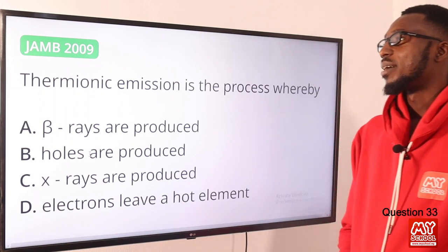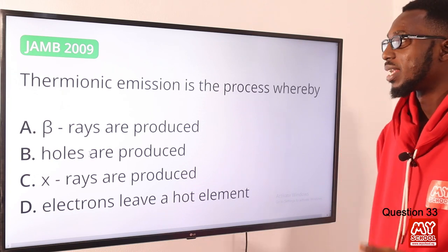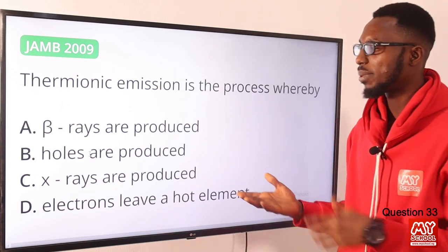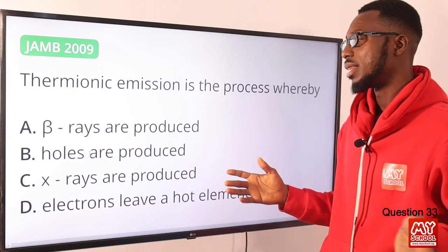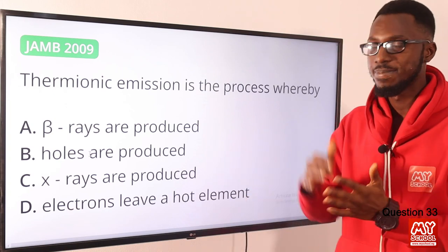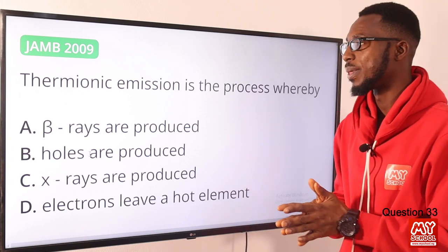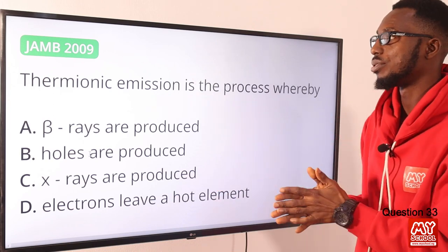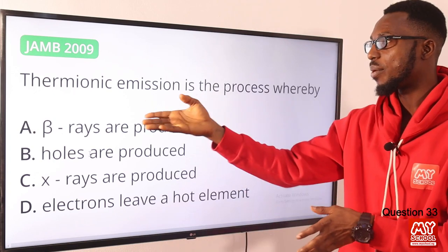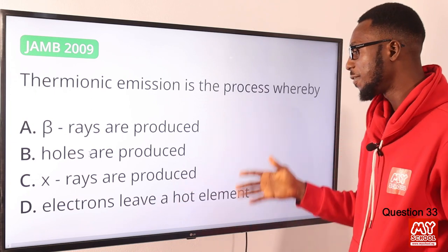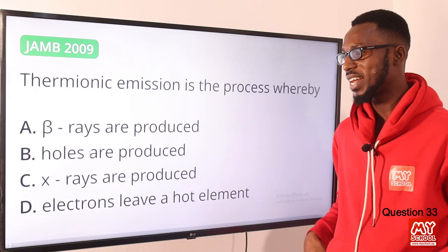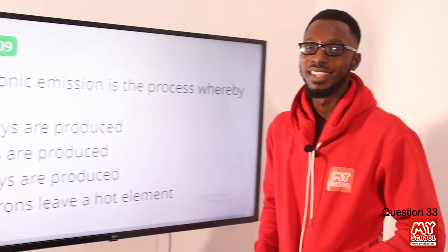Question 33: Thermionic emission is the process whereby electrons are emitted from an electrode or metal due to heat — by virtue of temperature. This differs from photoelectric emission, which is caused by light falling on the surface. Thermionic emission is the process whereby electrons actually leave a heated element. Option D is the correct option. That brings us to the end of this video lesson. Hit the like button, click subscribe, and tap the bell notification to be informed when we upload the next video.